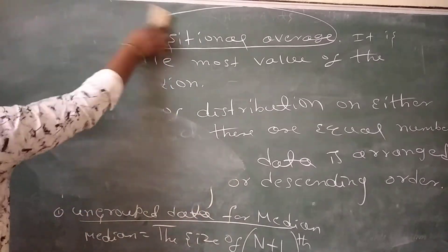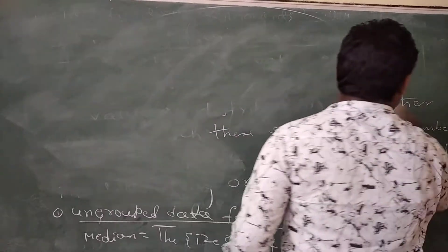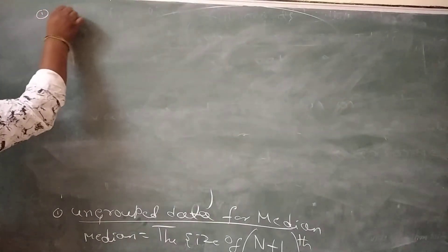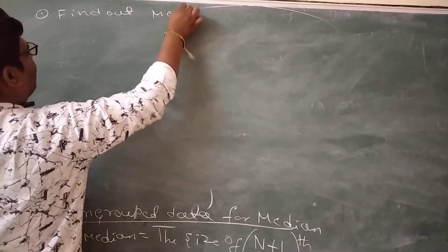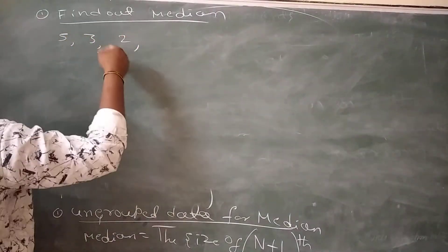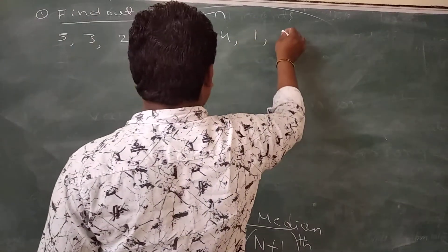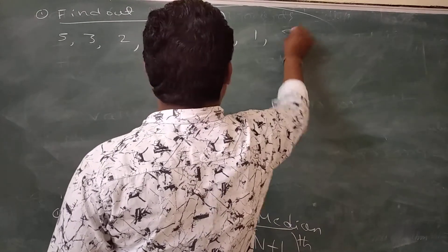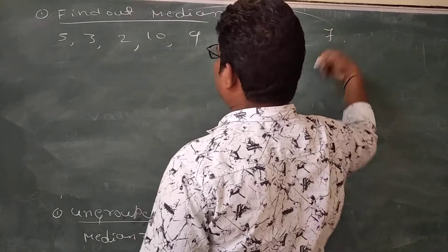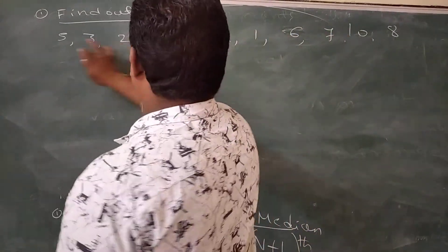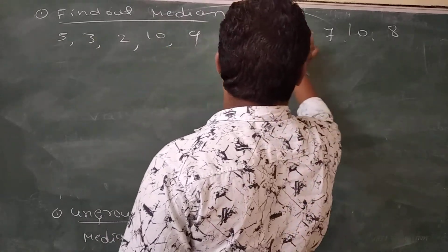Now, example. First method is, find out median value. For example, 5, 3, 2, 10, 9, 4, 1, 6, 7, 10, 8. Okay. There are ungrouped data.